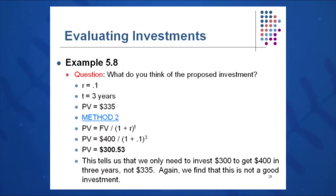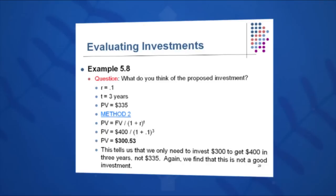Another way to look at it: use the present value equation. Present value equals future value over 1 plus R to the T. Take the $400 divided by 1.1 to the third, and you get a present value of only $300.53 today — rather than the $335 needed for the proposed investment to reach $400. So again, it's not a good investment. You can use this present value and future value lump sum equation to help sort through investments in life.